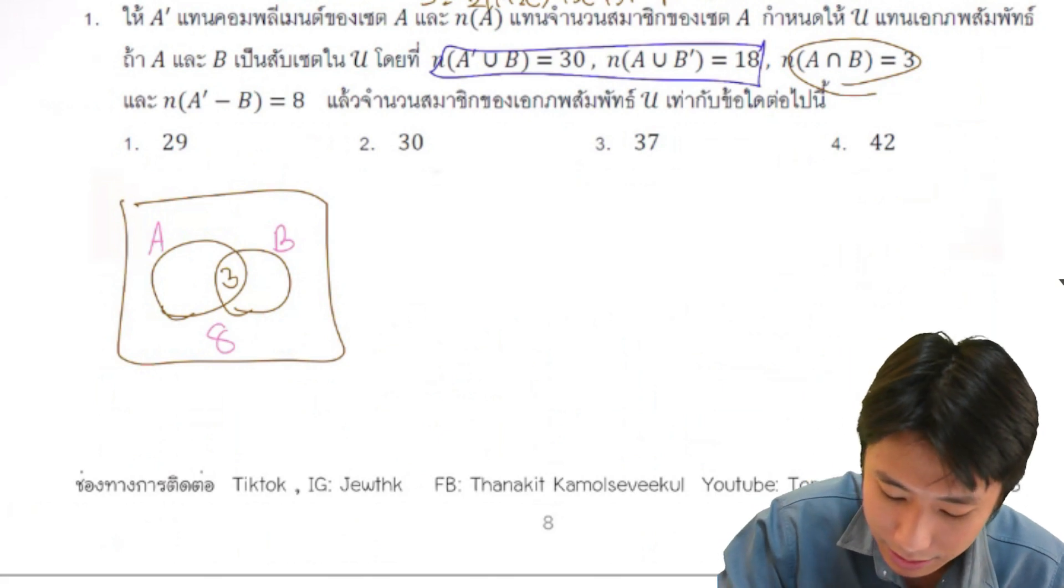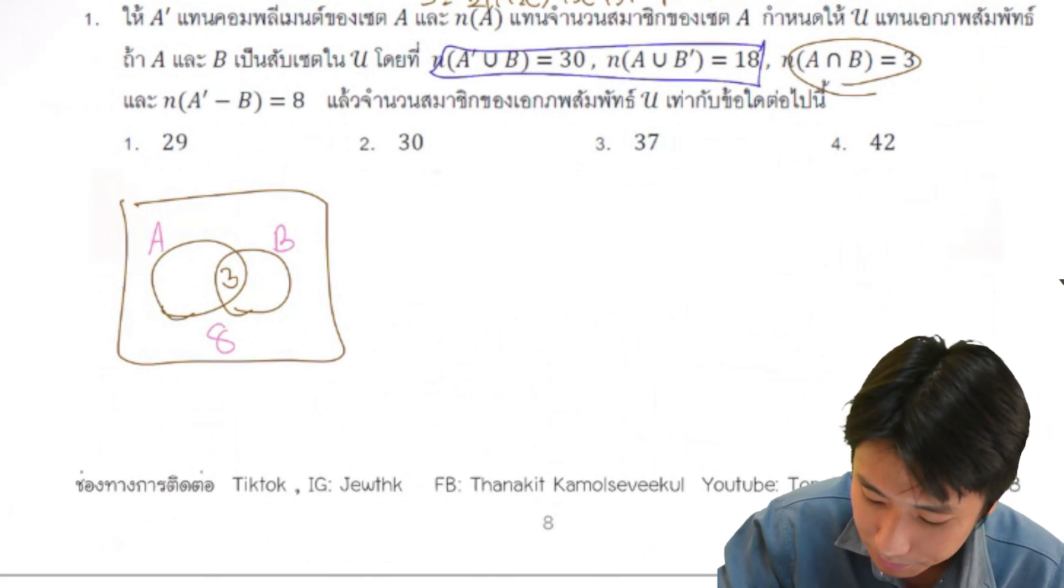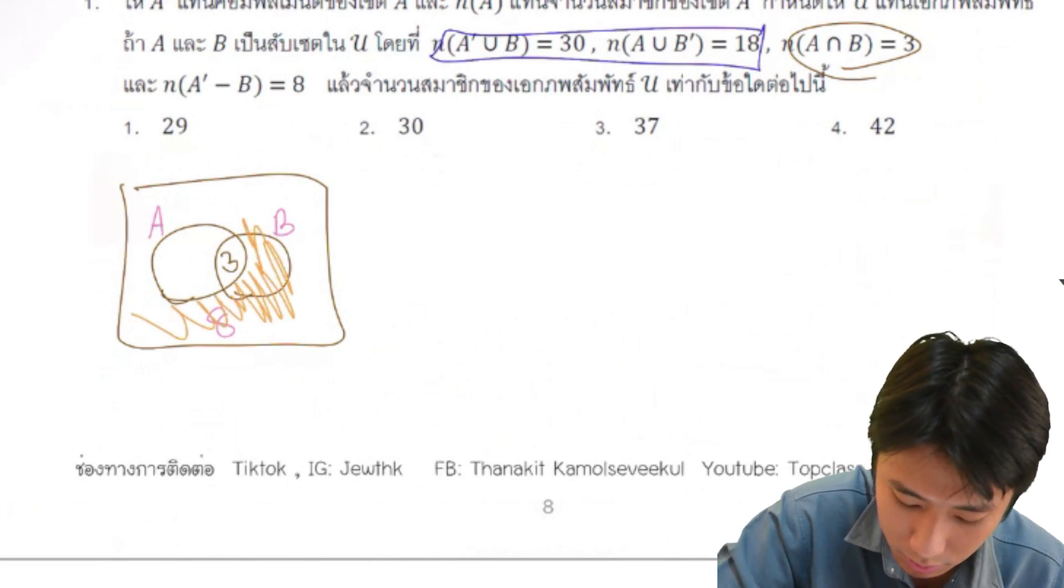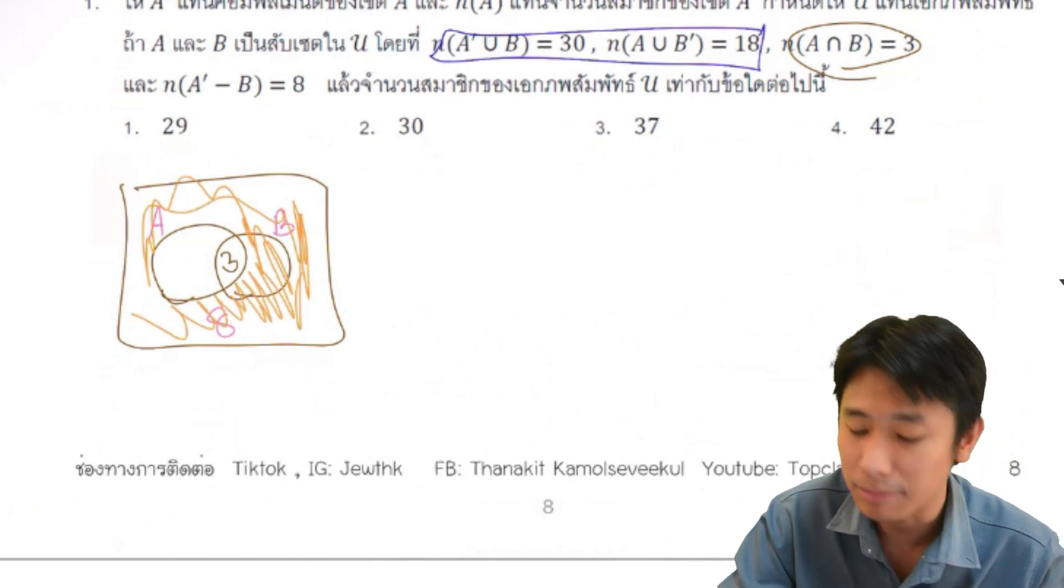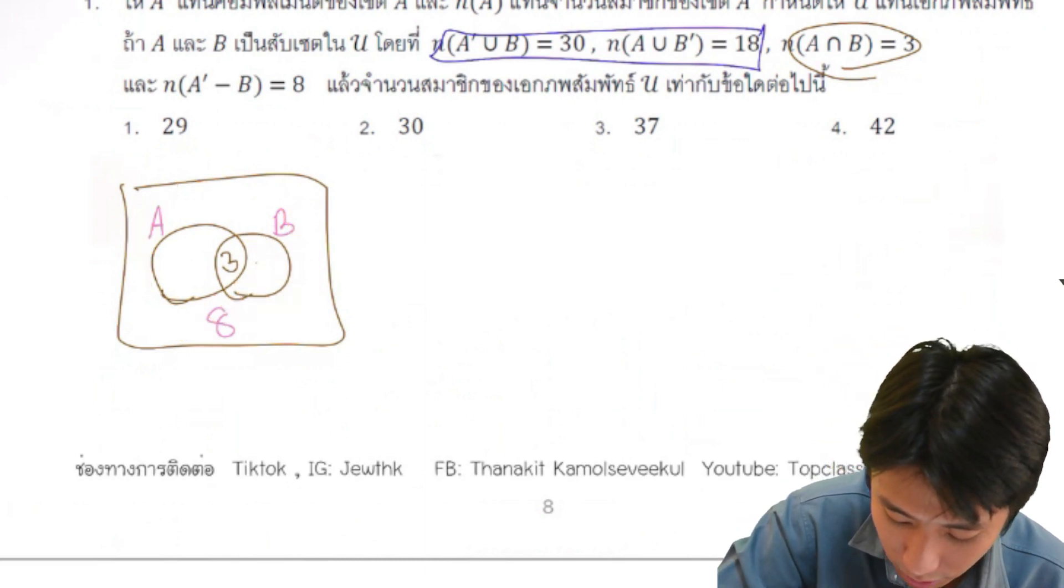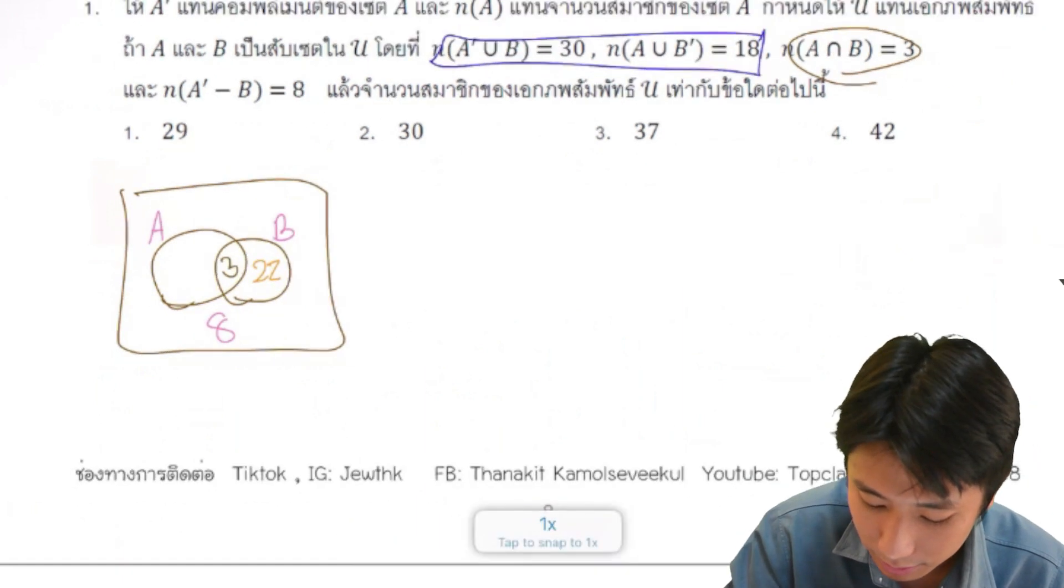He said it's the given condition. A union B equals 30. You can see it here, 30. This is the condition given here, which is 22.